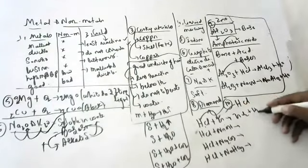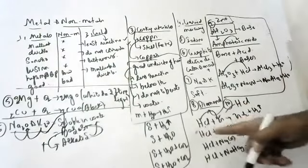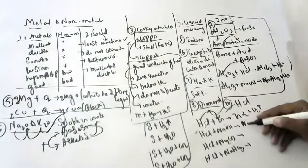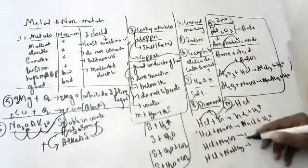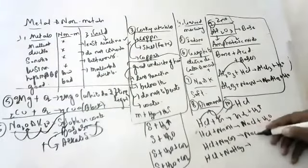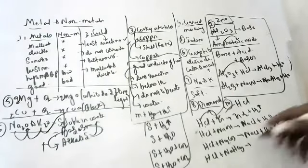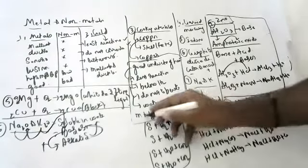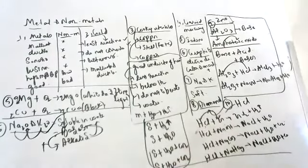Applying the rules: HCl with zinc gives ZnCl2 + H2 gas, because acid with metal gives salt plus hydrogen. HCl with NaOH gives NaCl + H2O, because acid with base gives salt plus water. HCl with Na2CO3 and HCl with NaHCO3 both give salt + water + CO2.